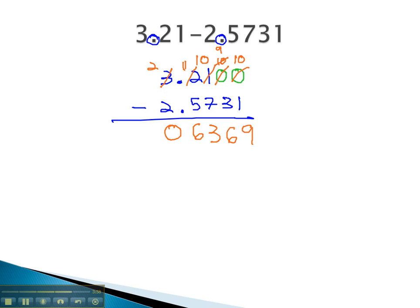And then finally, to decide where the decimal goes, we bring it straight down into the answer. And we get 6,369 ten-thousandths for our final difference.